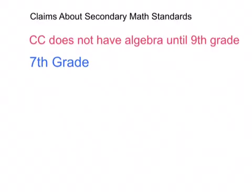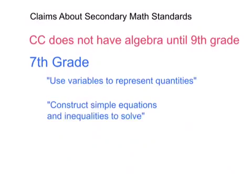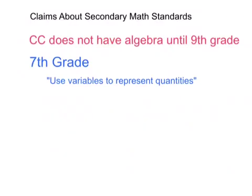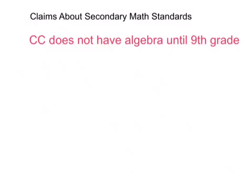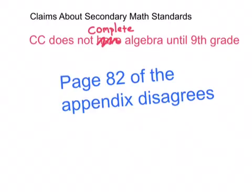We can even go earlier to 7th grade: using variables to represent quantities in real world and mathematical problems, constructing simple equations and inequalities and solving them. It was actually pointed out to Dr. Stotsky that algebra is included earlier than 9th grade, so she tried to backtrack and say Common Core doesn't complete algebra until 9th grade. But you can go right to page 82 of the appendix and see a specific plan for how students finish algebra before 9th grade.